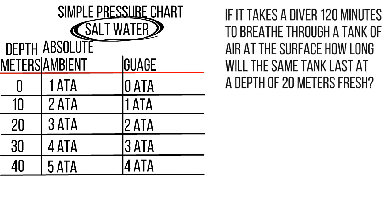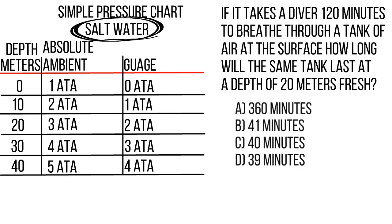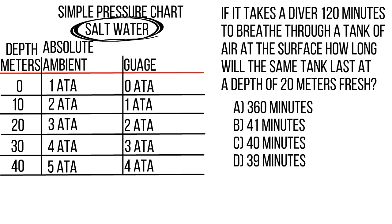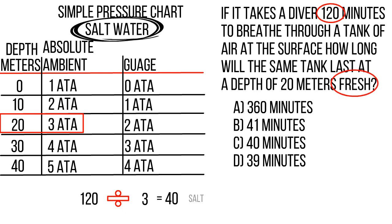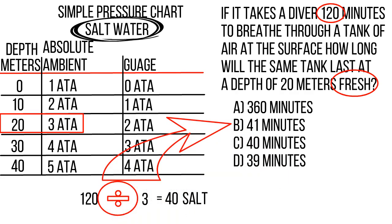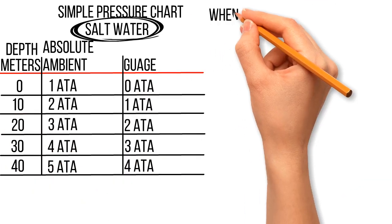For questions in freshwater this will work 90% of the time. Here's an example where it will not work: if it takes a diver 120 minutes to breathe through a tank of air at the surface, how long will the same tank last at a depth of 20 metres fresh? It will take less time to breathe through a tank at depth, so I'm looking for an answer less than 120 minutes. Taking the saltwater pressure at 20 metres — 3 atmospheres — and dividing: 120 ÷ 3 = 40 minutes. But the question is freshwater, and since I divided, instead of picking the answer that's a little bit less, I pick the answer that's a little bit more. 41 minutes is the answer.